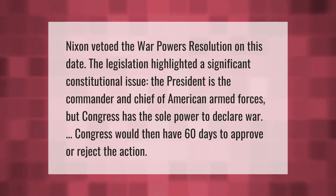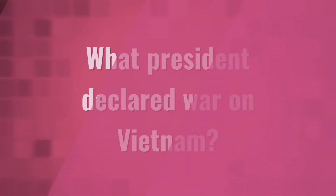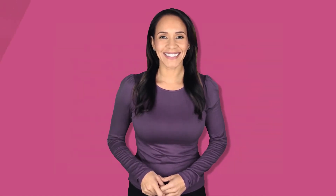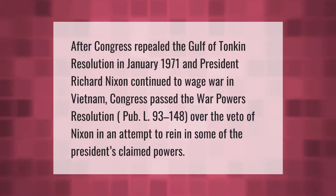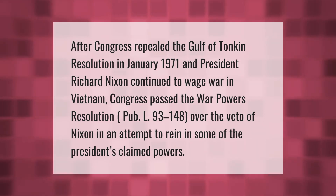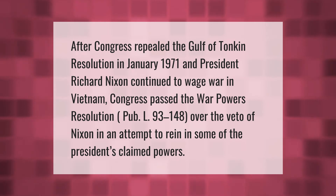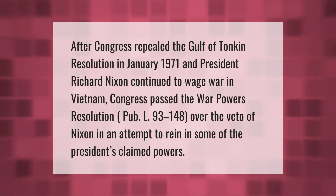After Congress repealed the Gulf of Tonkin Resolution in January 1971 and President Richard Nixon continued to wage war in Vietnam, Congress passed the War Powers Resolution, Pub. L. 93-148, over the veto of Nixon, in an attempt to rein in some of the president's claimed powers.